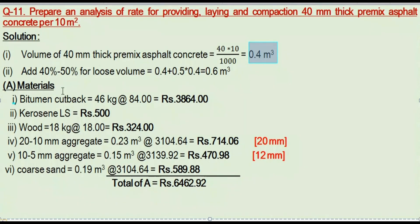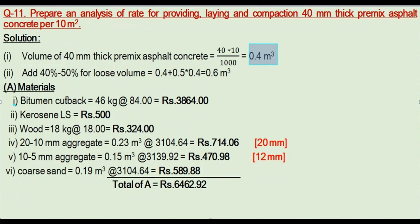For asphalt concrete materials — bitumen is a key component. For 10 meters square at 40mm thick, the standard bitumen (cutback) quantity comes to 46 kg. The rate for bitumen is approximately 84 to 90 per kg.